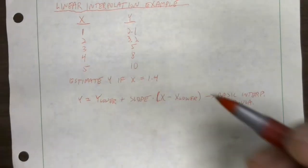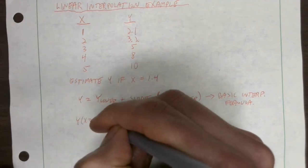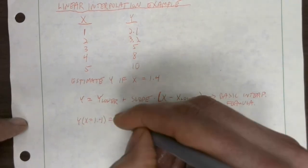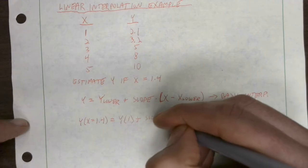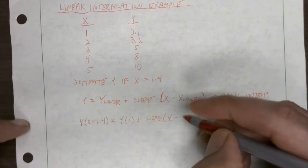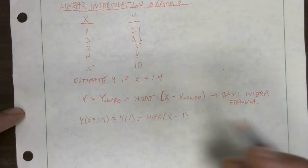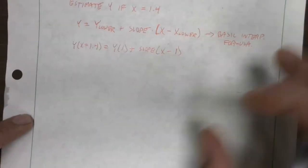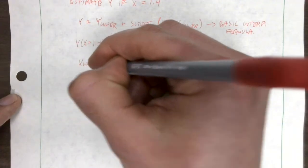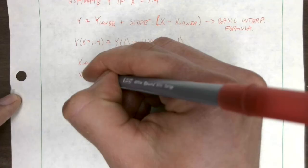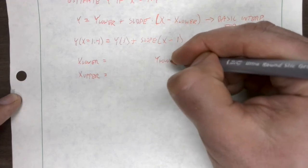Here we're trying to get y at x equals 1.4, so we need the y at our lower value, y at 1, plus our slope times (x minus 1). We need to get our lower and upper values for x and y. I'm going to summarize the table here.